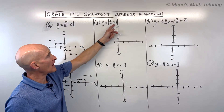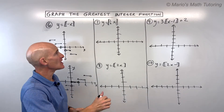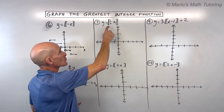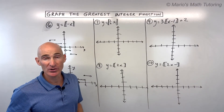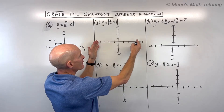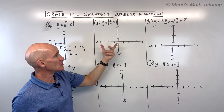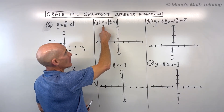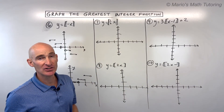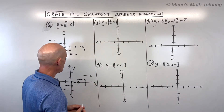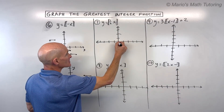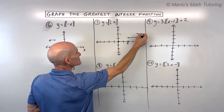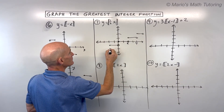For number 7, y equals the greatest integer of (1/2)x. The 1/2 is grouped with the x inside the double brackets. Remember, when it's grouped with the x, it affects x values but with the opposite effect — we multiply x values by the reciprocal, which is 2. So this is actually a horizontal stretch by a factor of 2. In order to get the same y value, x now has to be twice as large. The stairs are twice as long — going all the way to 2 before jumping up, then to 4, and so on.